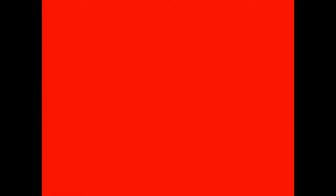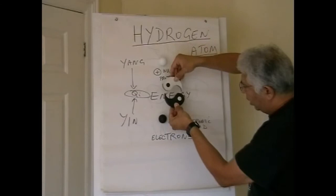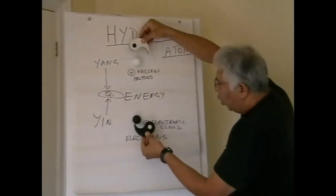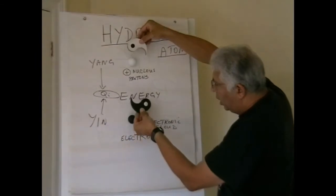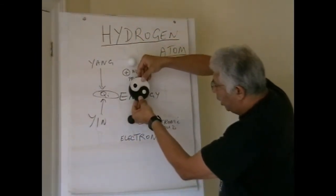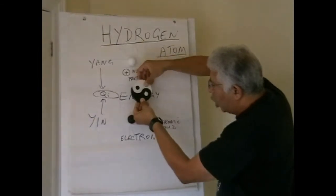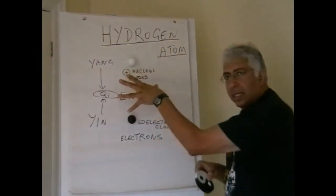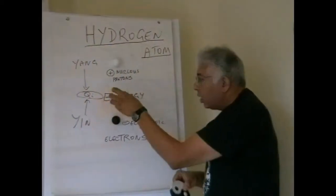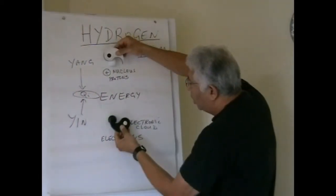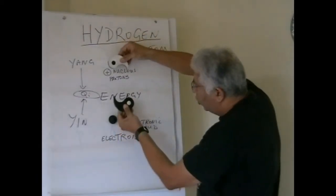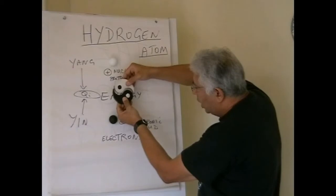That is what the Tao talks about: the yin and the yang come together and create energy. The same thing happens when a female egg — yin — combines with a male sperm — yang — and creates energy, creates life. So at the atomic level, this represents the Tao.